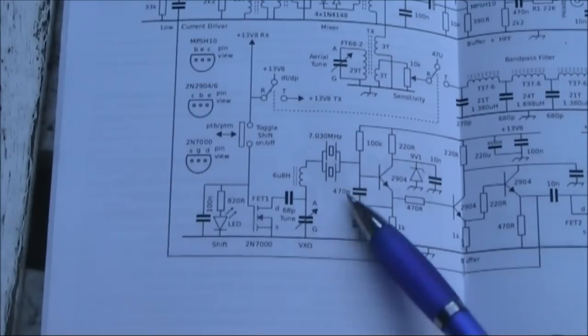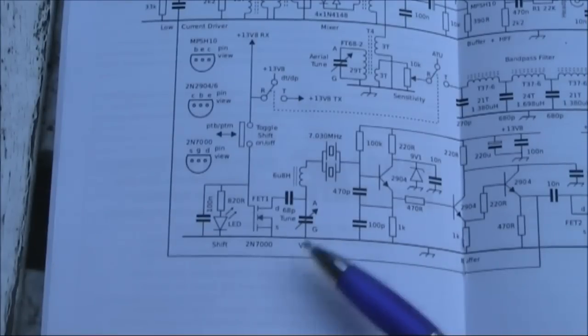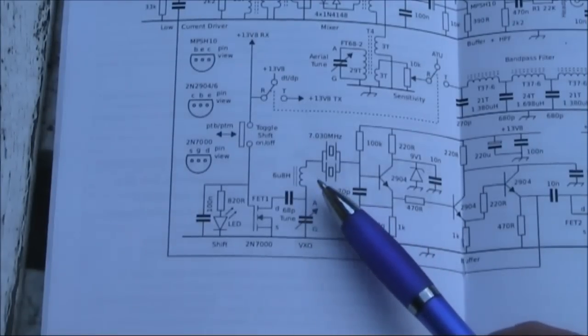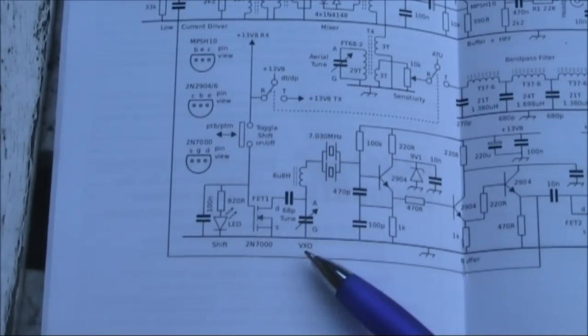Having a look at where signals start, in other words the VXO, it's on 7 meg which happens to be the operating frequency. There's two crystals and a series coil, so it should have a reasonable pulling range.